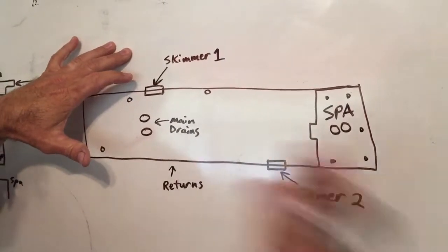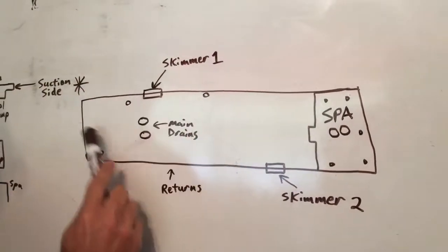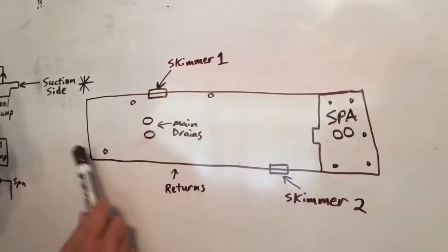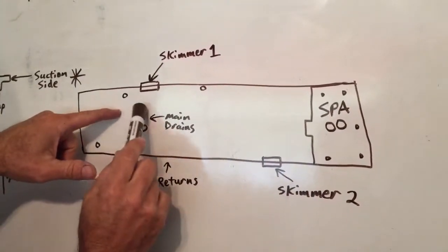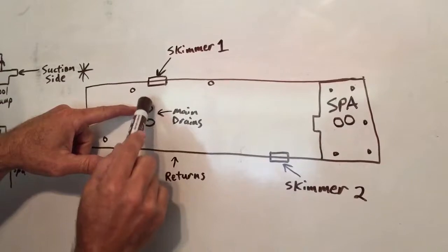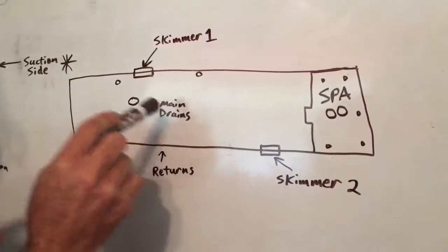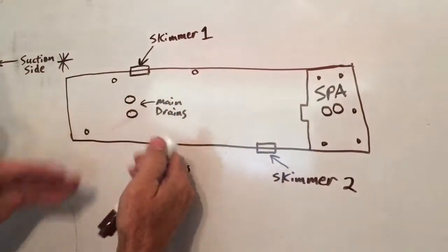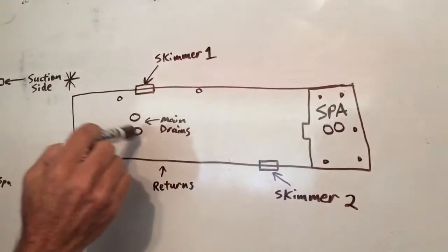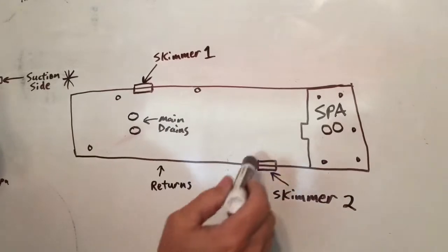You can empty the baskets out, throw the leaves out. The main drains sort of circulate the bottom section of the water in the pool. There's usually two, these are the drain covers on the bottom of the pool, usually two of them down there. And then there's water also flowing through those to circulate that bottom half of the water.